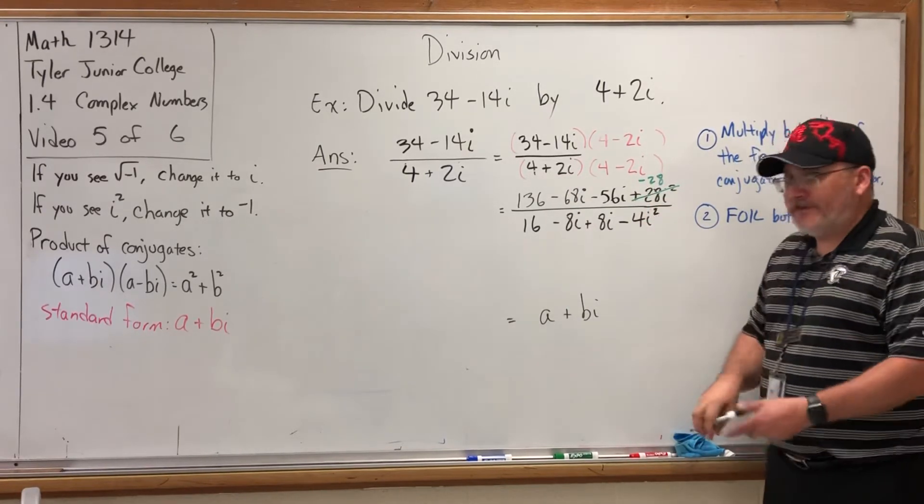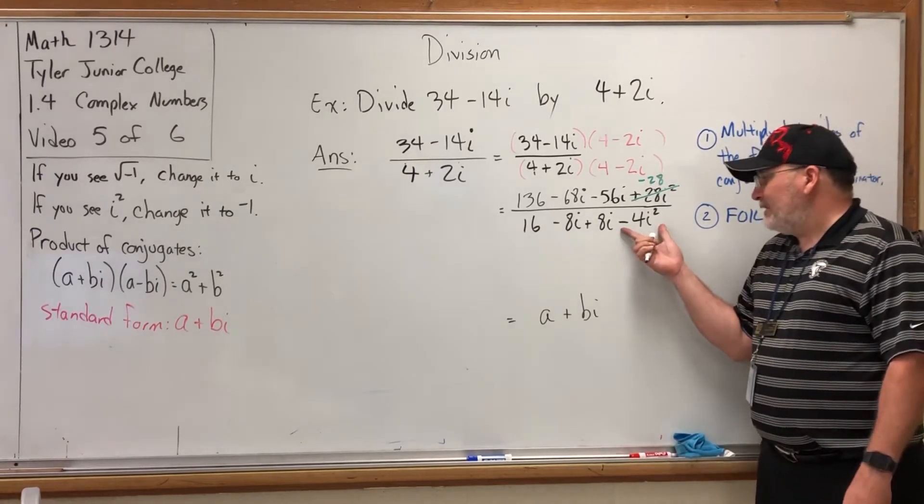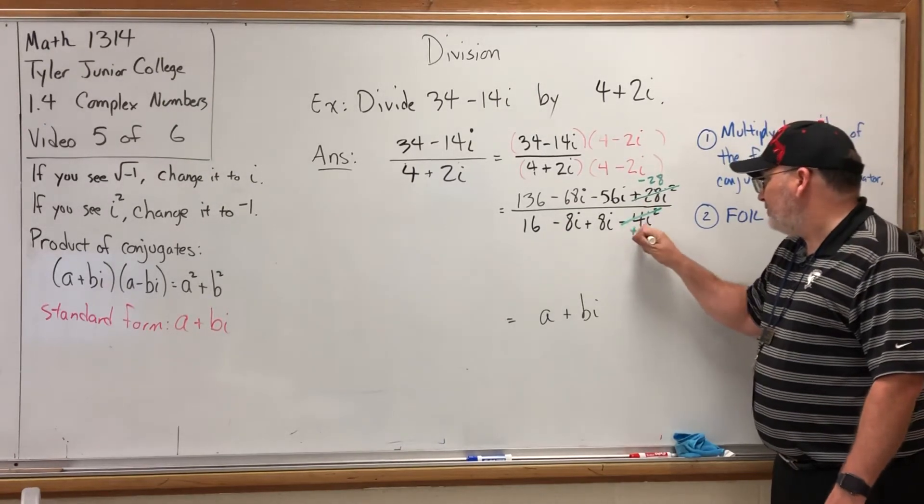Oh look, I see another i². When you see it, you change it to -1. This becomes -4 × -1, which makes it a +4.